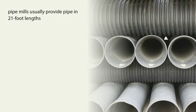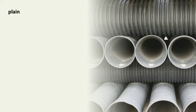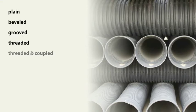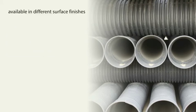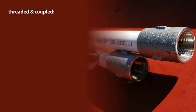Pipe mills usually provide pipe in 21-foot lengths, although specialty lengths of up to 40 feet can be obtained in some sizes. Pipe can be provided with plain ends, beveled ends, grooved ends, threaded ends, or threaded and coupled ends, and is also available in a number of different surface finishes.